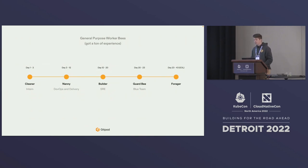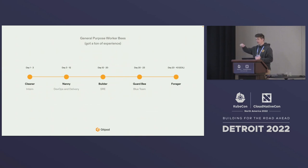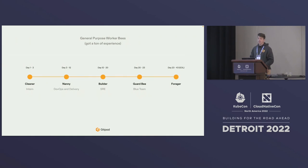Finally, they become foragers — what you normally think of when you think of a bee: flying around, going to flowers, collecting nectar and pollen and bringing that home. That's only the last 20 days, only half of the entire life of a bee.